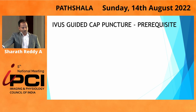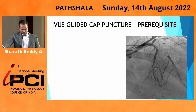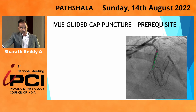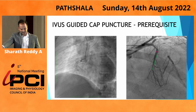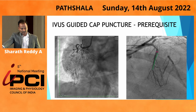The most important prerequisite for IVUS-guided cap puncture is the size of the side branch proximal to the cap. The diameter and length should be acceptable, and based on the length, we choose the IVUS catheter tip-to-transducer distance. In this kind of total occlusion with a short side branch, it is almost impractical to send the IVUS catheter. And here, though the size is good, it is quite a loopy side branch — again, making IVUS-guided entry difficult.